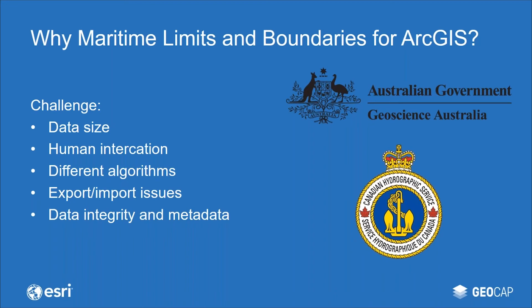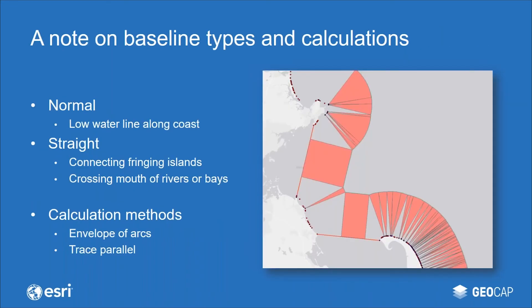Getting back to one of these points, I want to talk a little bit about the different baseline types. You have two different types: normal, which is following the low water line along the coast, and straight baselines for connecting fringing islands or crossing the mouth of rivers or bays. The way that you calculate limit lines from these different baseline types is different — you either use the envelope of arcs or a wagon wheel following the coastline, or you use the tracé parallèle to project the straight baseline outwards to your limit line. This has been combined into one operation inside this new extension.